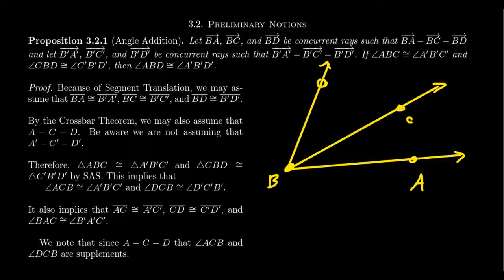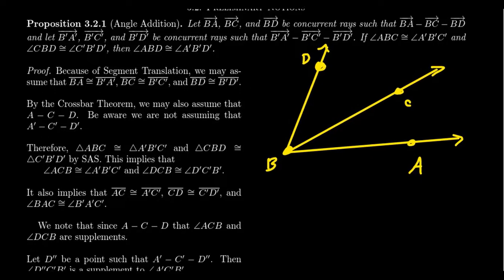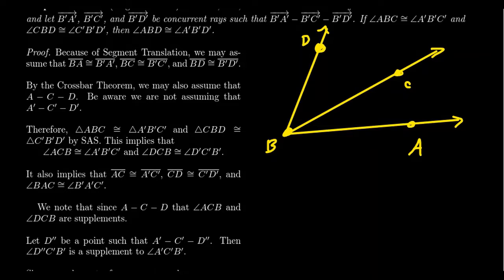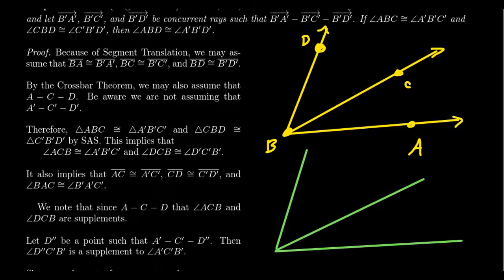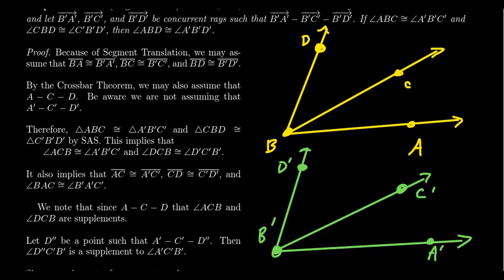Those are just the first assumptions. We also have other rays: B'A', B'C', and B'D' — also concurrent with common vertex B'. Likewise, assume that B'C' is between B'A' and B'D'. So we get essentially the same picture: three rays from vertex B', with points A', C', and D' so that B'C' sits between the other two.